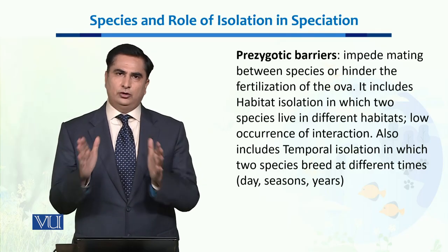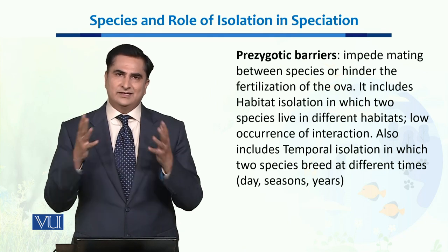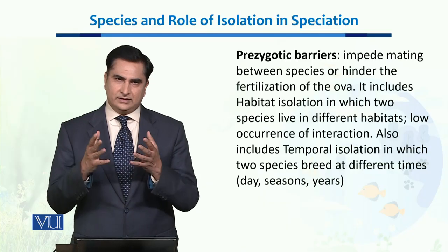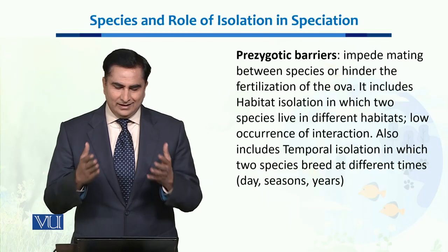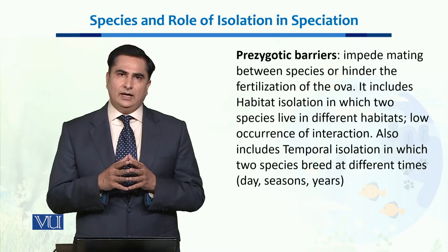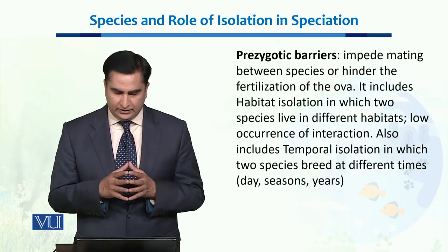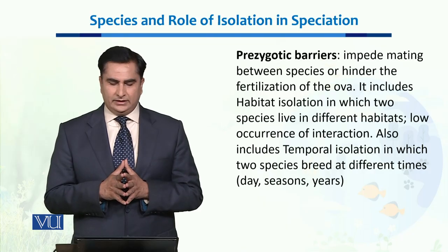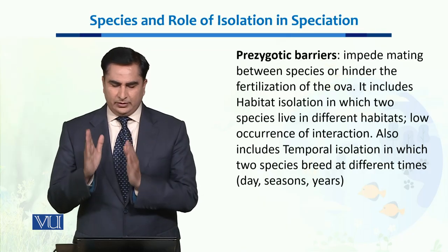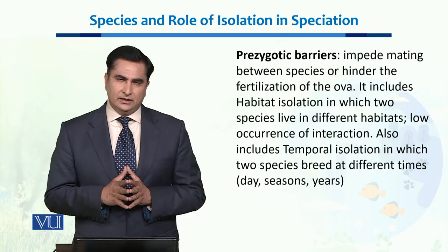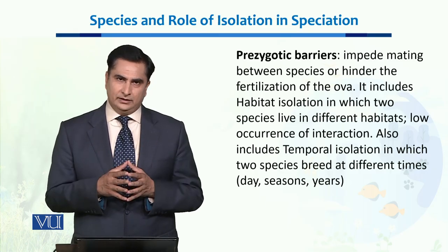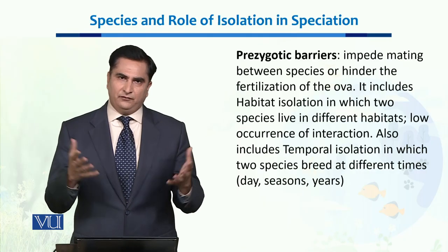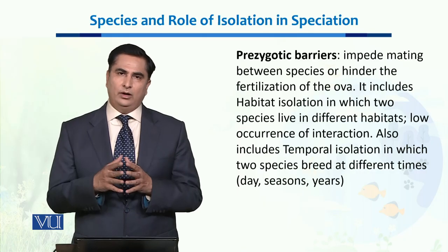One type of pre-zygotic barrier is habitat isolation, in which two species live in different habitats within the same ecosystem, and low occurrence of interaction results in different habitat isolations. Another type is temporal isolation, in which two species breed at different times, so they don't have a chance to mate with each other due to their mating cycles occurring at different times of the month or year.